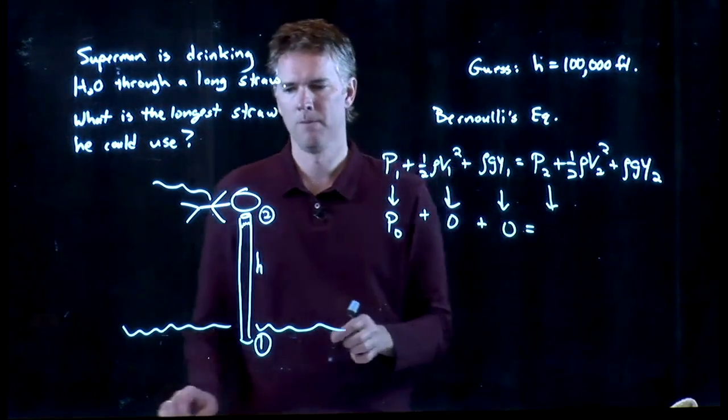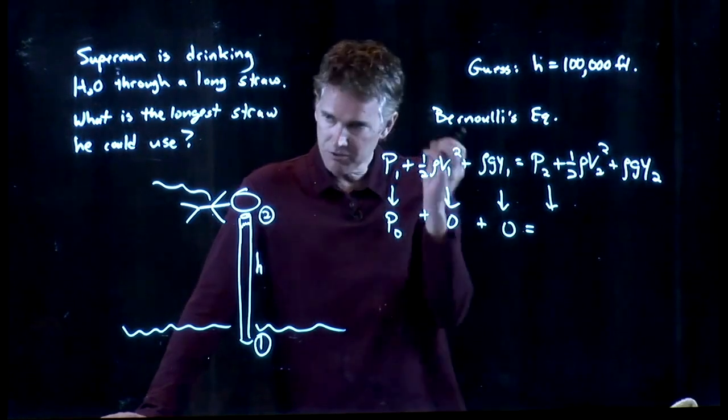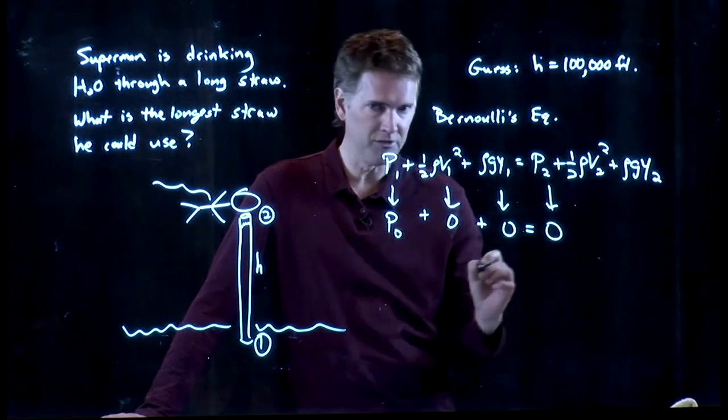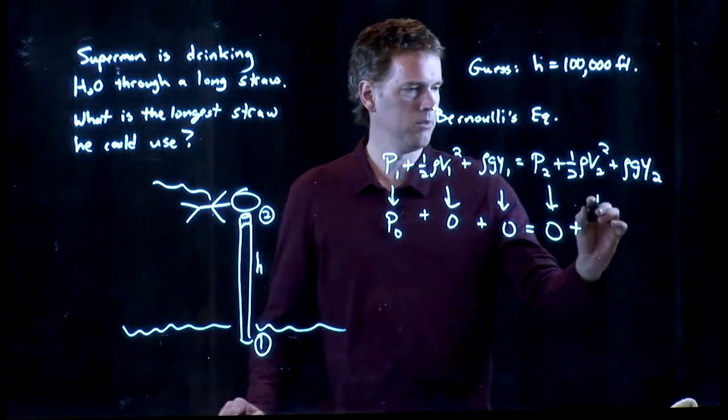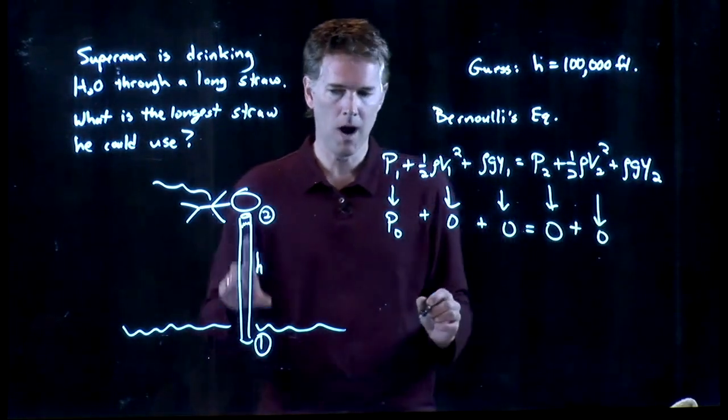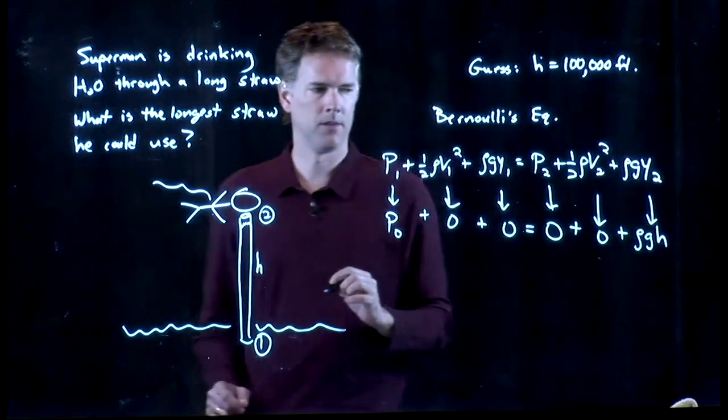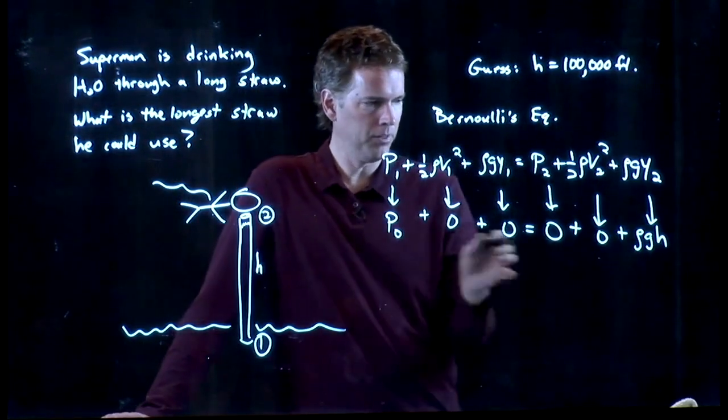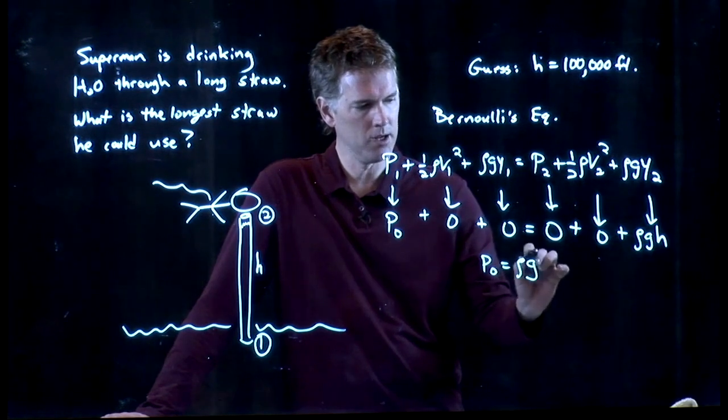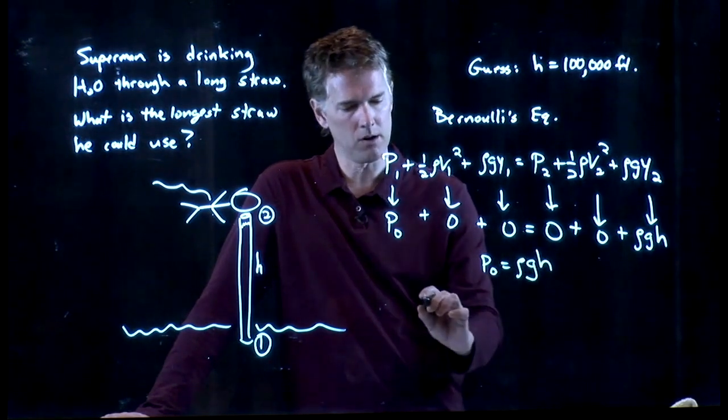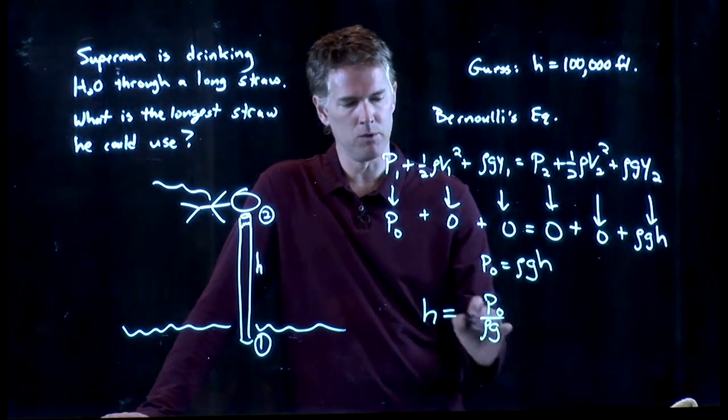What is P2? P2 is the pressure at that end of the straw, but he's Superman, so he can suck all the air out of it. So the pressure there is zero. There's no air left in the straw. V2 is zero. Y2 is the height H. And so look what happens. Most of these things go to zero, and all we're left with is P0 equals rho times G times H. And these are all constants that we know. H is equal to P0 over rho G.